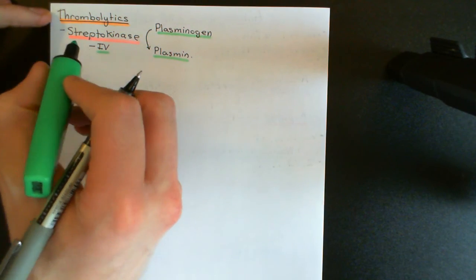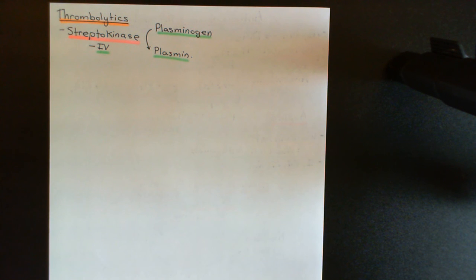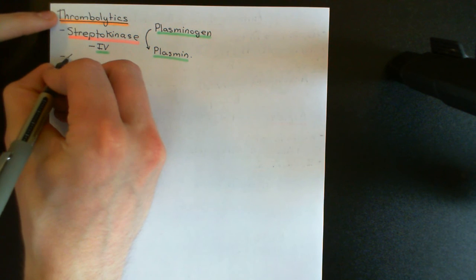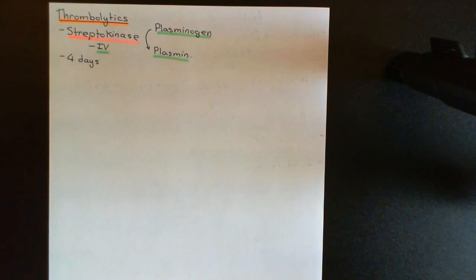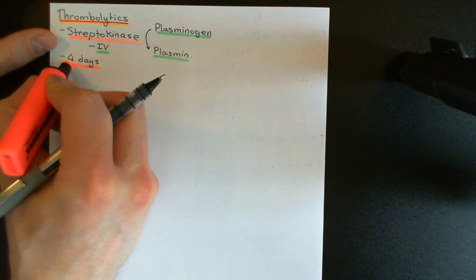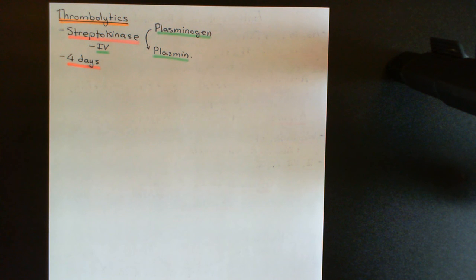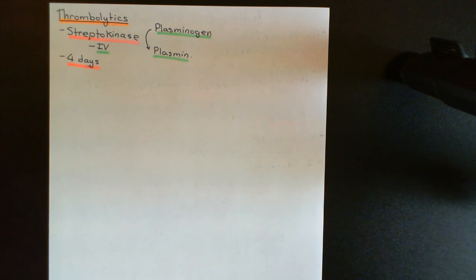There is a very important thing to know about streptokinase: it is antigenic and will provoke an immune response, causing antibodies to be produced against it. Within four days of having intravenous streptokinase injected, you will have antibodies against it, and all of the streptokinase will be cleared from the bloodstream. This means streptokinase stops working, and you can never use it again. Streptokinase is a drug you can have once and once only. If used again, the adaptive immune response would fire up much more quickly, producing antibodies very quickly that would inactivate it, and it would probably be quite dangerous.